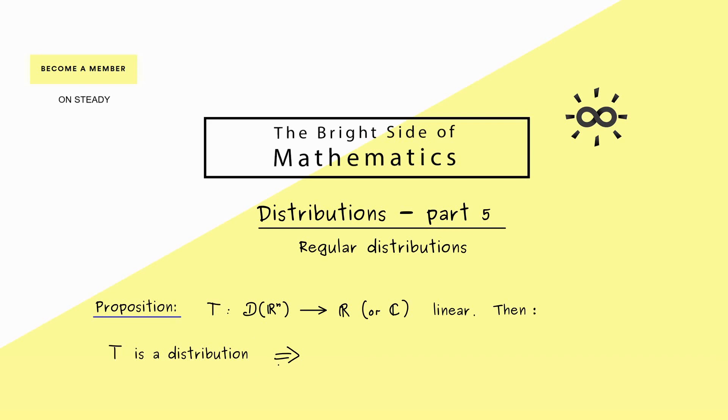T is a distribution if and only if for all compact sets in R^n there exists a natural number m, which could be 0.